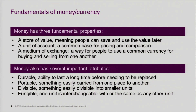There are four important attributes to money that we're going to be referring to throughout the module. One is that it's durable — it has the ability to last a long time before needing to be replaced. It's portable, meaning it can be easily carried from one place to another. It's divisible, meaning it's easily divisible into smaller units. And it's fungible — one unit is interchangeable with, or the same as, any other unit. It's really important to keep this in mind as we go through the module.